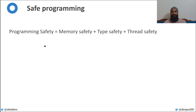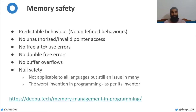Or four if you count null safety as a separate item — for folks like me who come from a Java or JavaScript background. In a memory safe language, when you access a variable or an item in an array, you can be sure that you are indeed accessing what you meant to or are allowed to access.